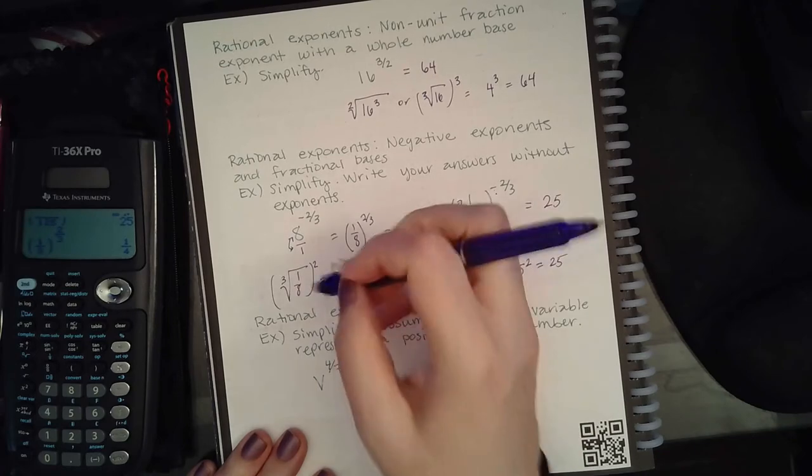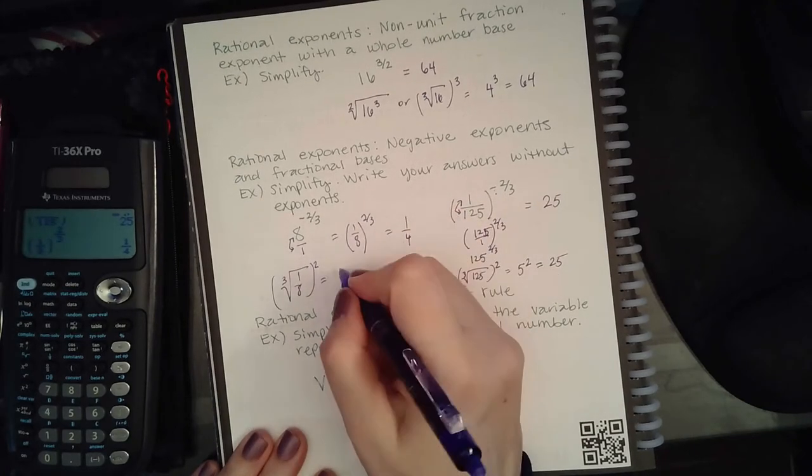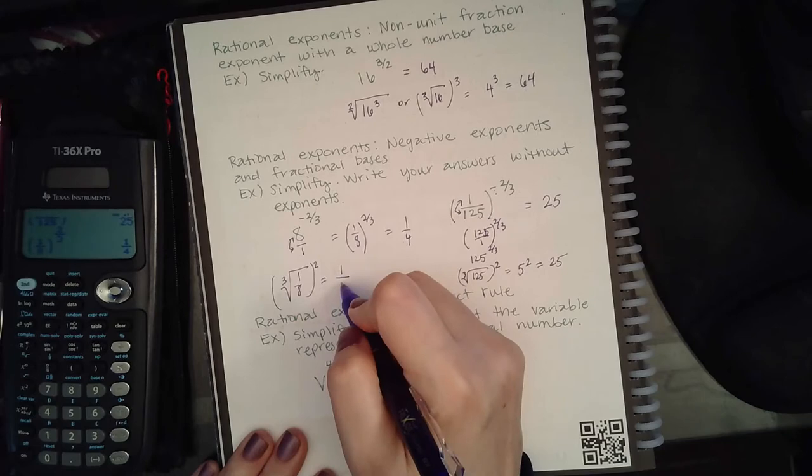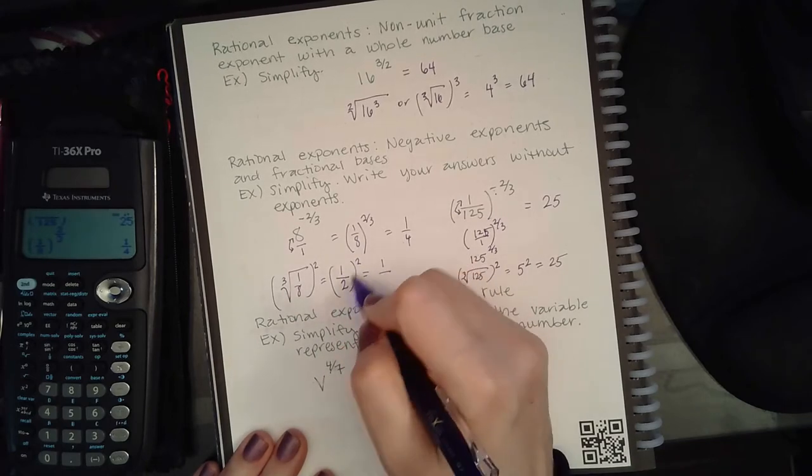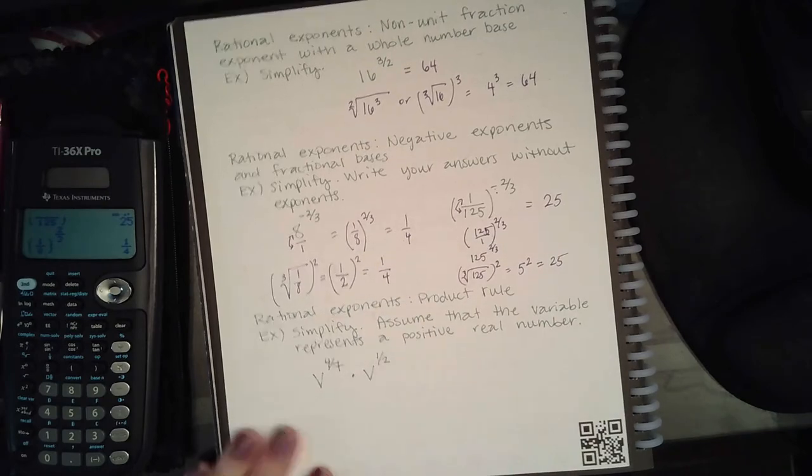The cube root of 1 is 1, the cube root of 8 is 2, and if I raise that to the second power, 1 to the second power is 1, 2 to the second power is 4, and so you get the same result.